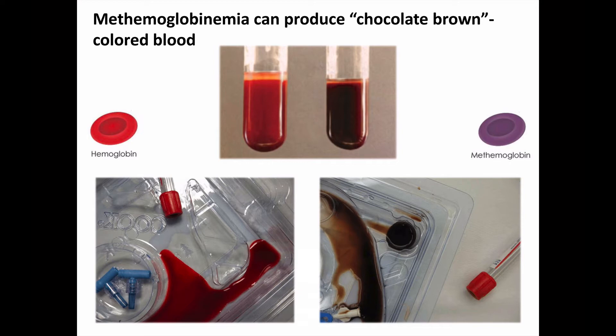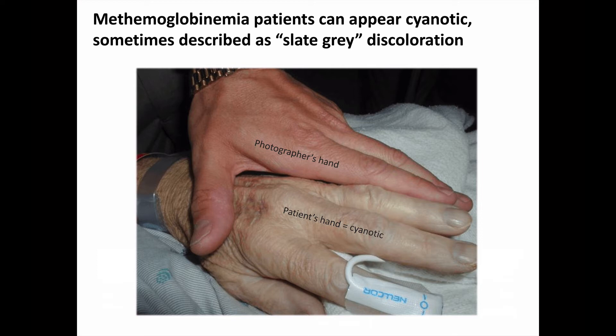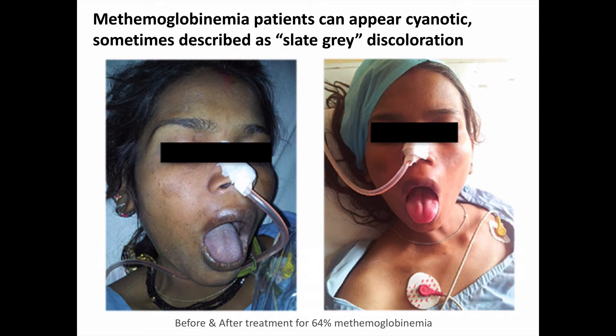Methemoglobin is brownish — often described as chocolate brown in the medical literature. Very notably brown blood specimens from patients with pronounced methemoglobinemia can be seen on the right side. This discoloration can be seen externally too, since blood pigments affect skin tone, particularly in lighter-skinned individuals. Patients with methemoglobinemia are often described as appearing cyanotic or having a slate-gray discoloration. Cyanosis literally means blue, but it's not exactly the same shade as seen with hemoglobin desaturation from hypoxia — we might say there is pseudocyanosis. Here we see a young woman who looks markedly cyanotic with blue-purple tongue and lips when she had 64% methemoglobinemia.